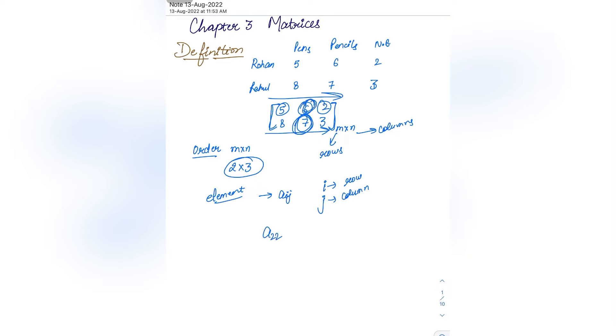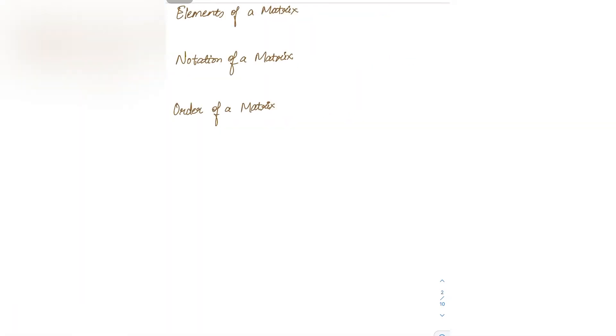And the above element 6, it is a12. So the elements of a matrix are represented as aij. If we cover the elements in square brackets, that becomes the general notation of a matrix.